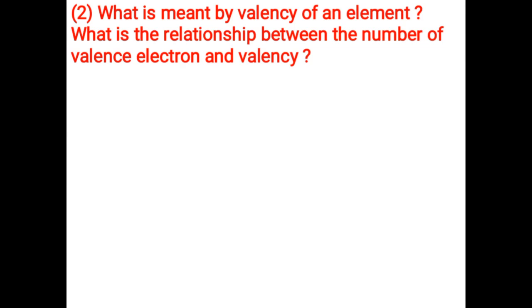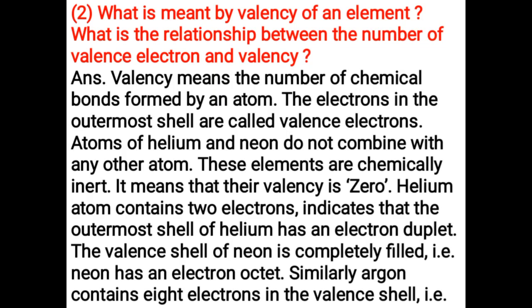What is meant by valence of an element? What is the relationship between the number of valence electrons and valency? Valency means the number of chemical bonds formed by an atom. The electrons in the outermost shell are called valence electrons. Atoms of helium and neon do not combine with any other atom — these elements are chemically inert, meaning their valence is zero.